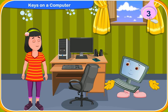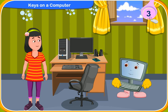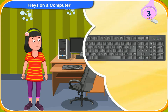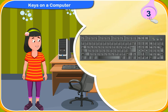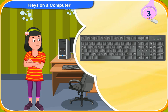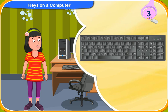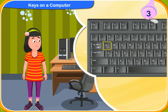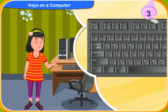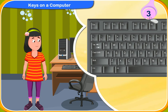Now, do you know what a QWERTY keyboard is? I think they are the most commonly used keyboards. In these keyboards, the alphabets are not arranged in the order from A to Z. They are arranged as QWERTY — that means Q, W, E, R, T, Y from the first row. And so they are called QWERTY keyboards.